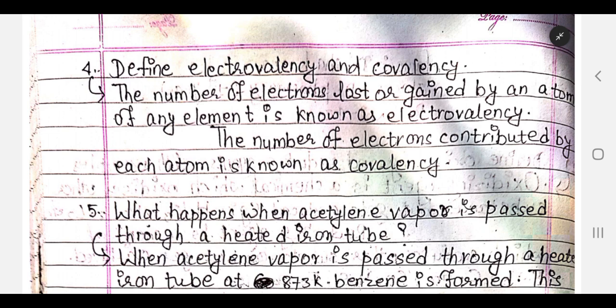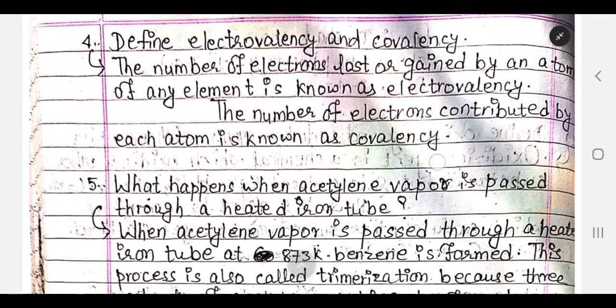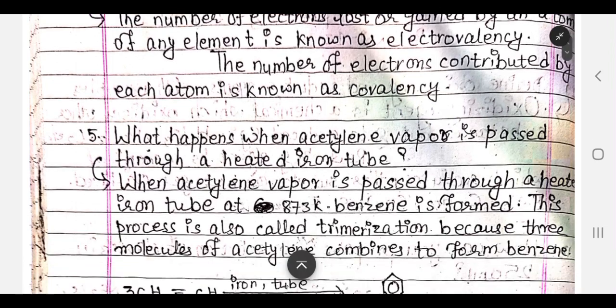The number of electrons lost or gained by an atom of any element is known as electrovalence. The number of electrons contributed by each atom is known as covalence. This is a definition-related question.